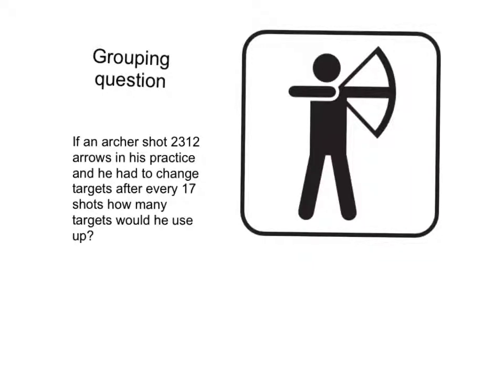My grouping question. If an archer shot 2,312 arrows in his practice and he had to change targets after every 17 shots, how many targets would he use up?